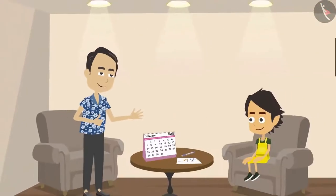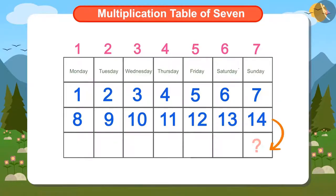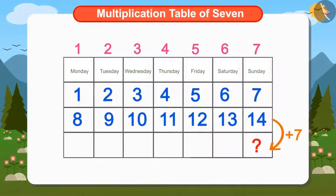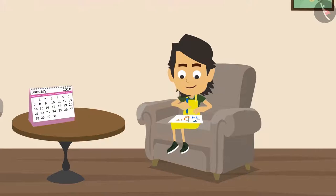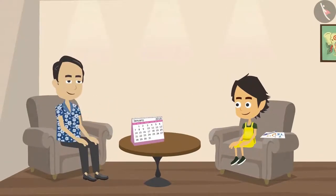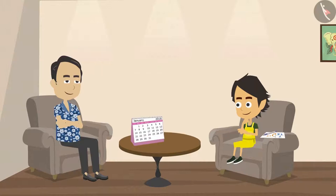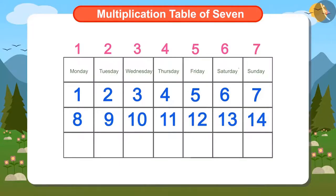Papa complimented Ayushman and further asked what date would it be on the following Sunday after 14th. Ayushman understood how to find the answer — he has to add 7 to 14. But Papa stops him and wants Ayushman to answer this question without paper and pen. Can you help Ayushman? Ayushman understood that just like he added 7 to the date 7th to find 14th, similarly by adding 7 to 14, he will get the date of the following Sunday.